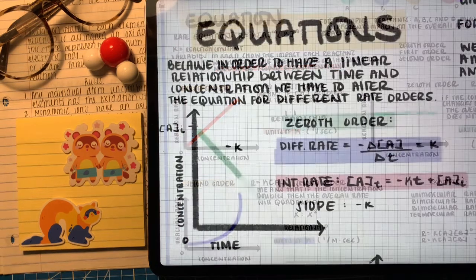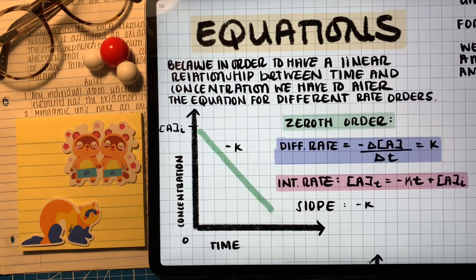With our first example of integrated rate law we're going to talk about a zeroth order reaction. We know that zeroth order the concentration has no impact on the overall rate, so the differential rate law is just the rate constant. Now this makes things a little easier for the integrated rate law and telling the reaction of the reactant at any given time.